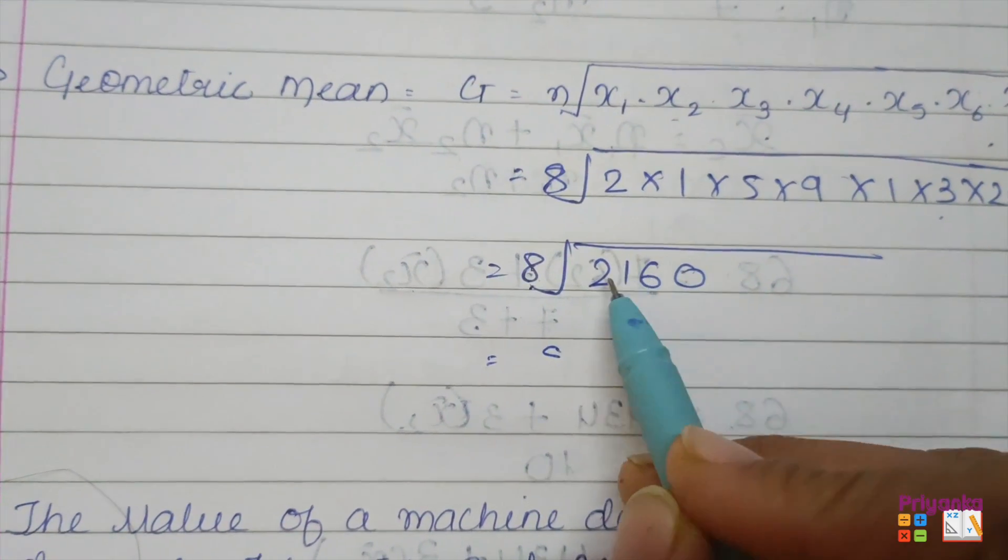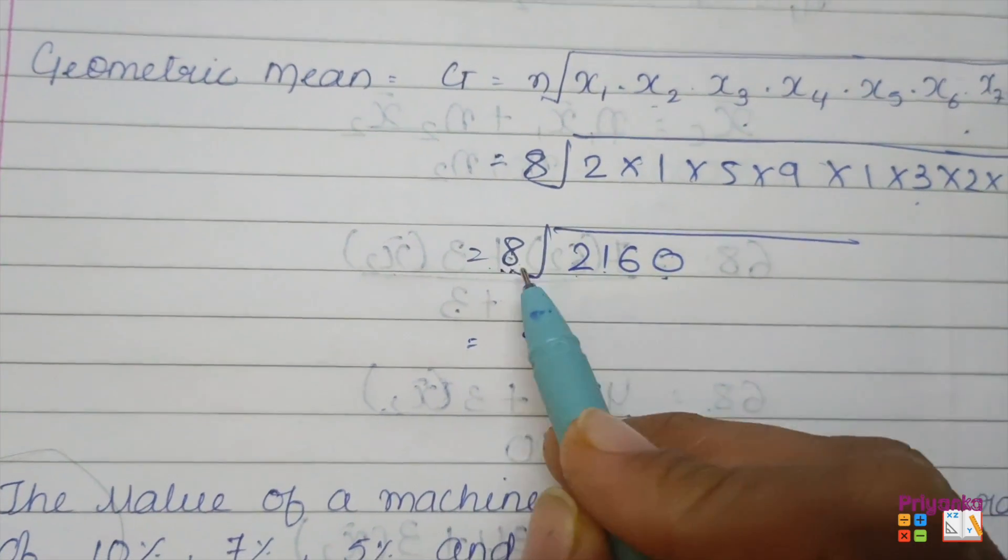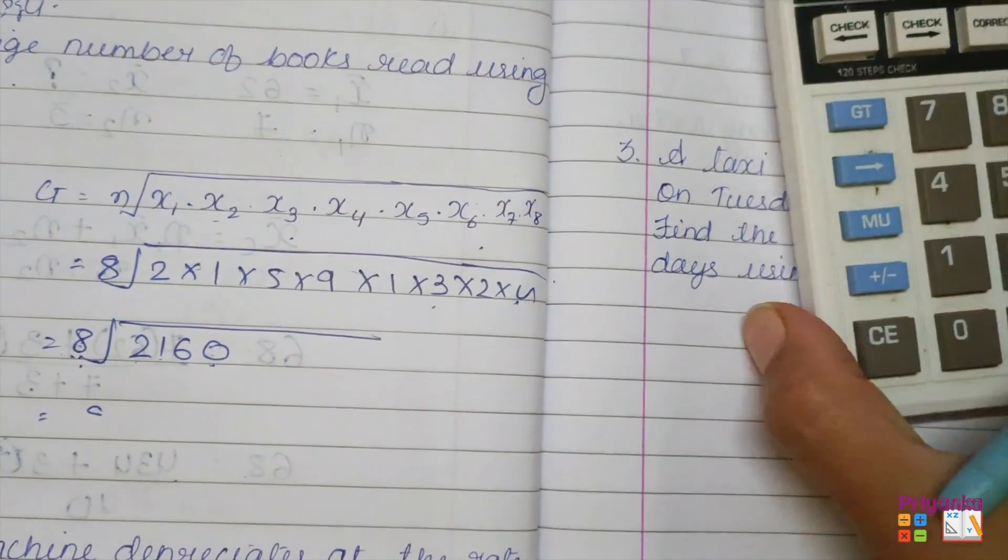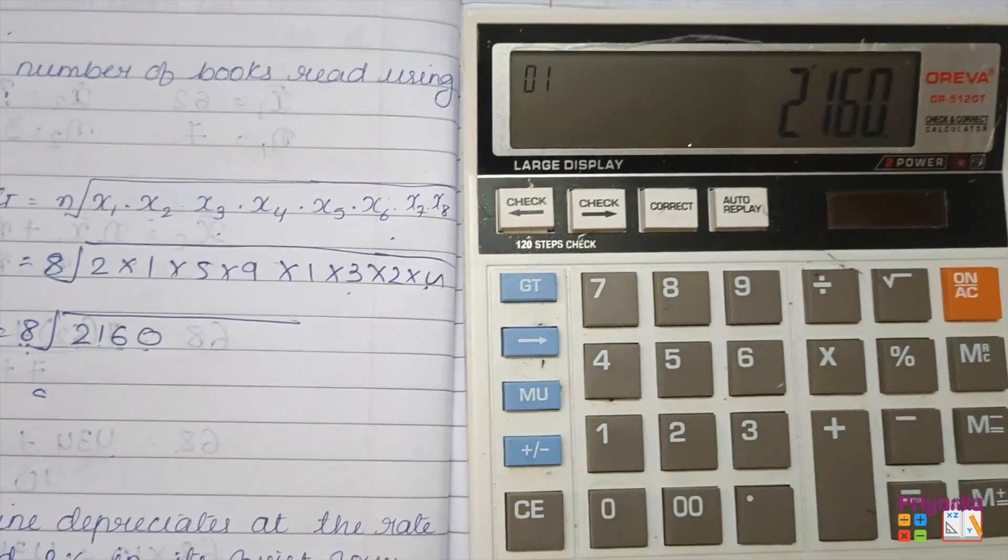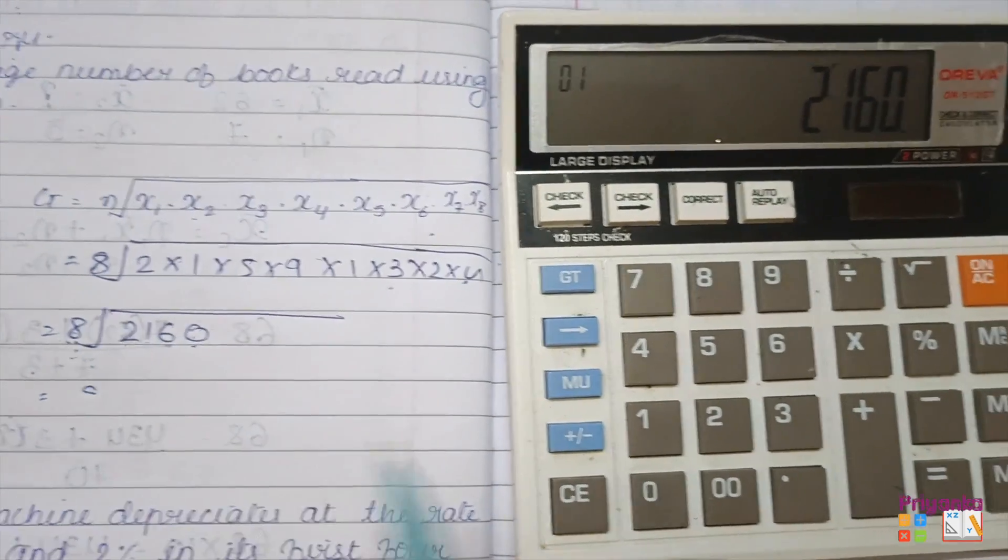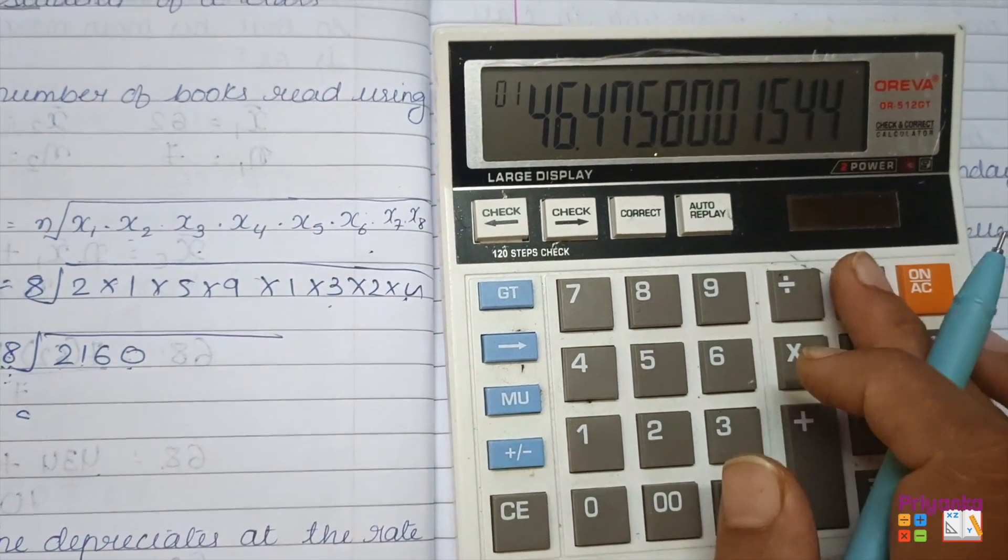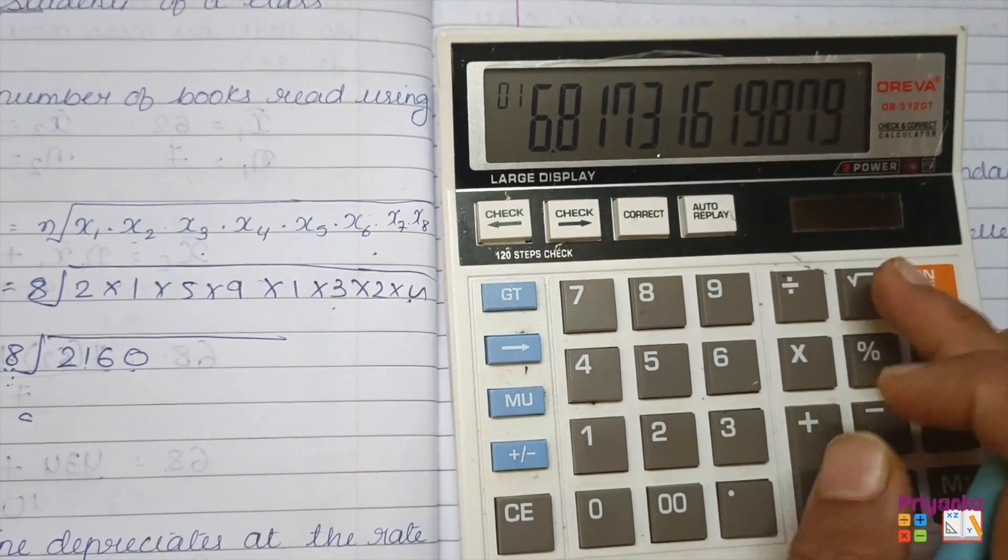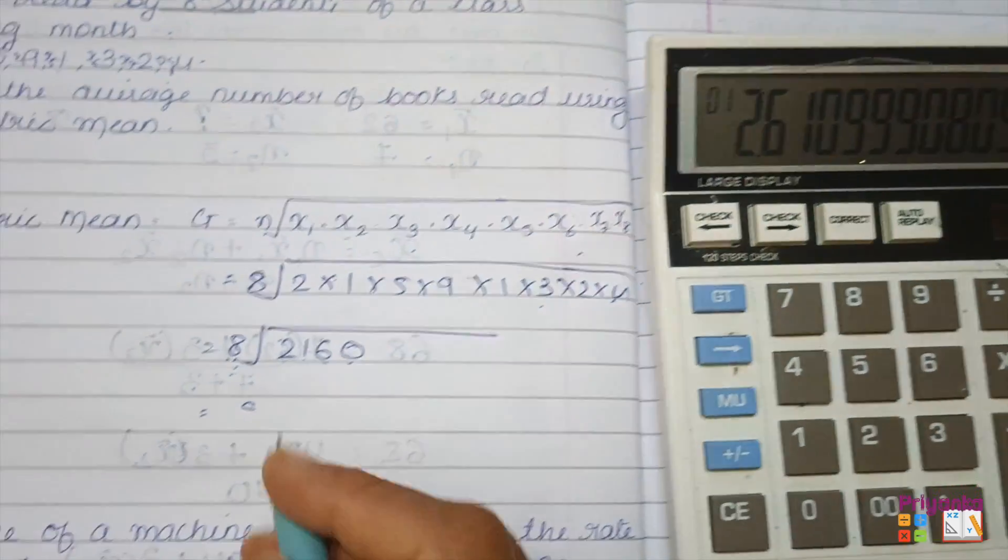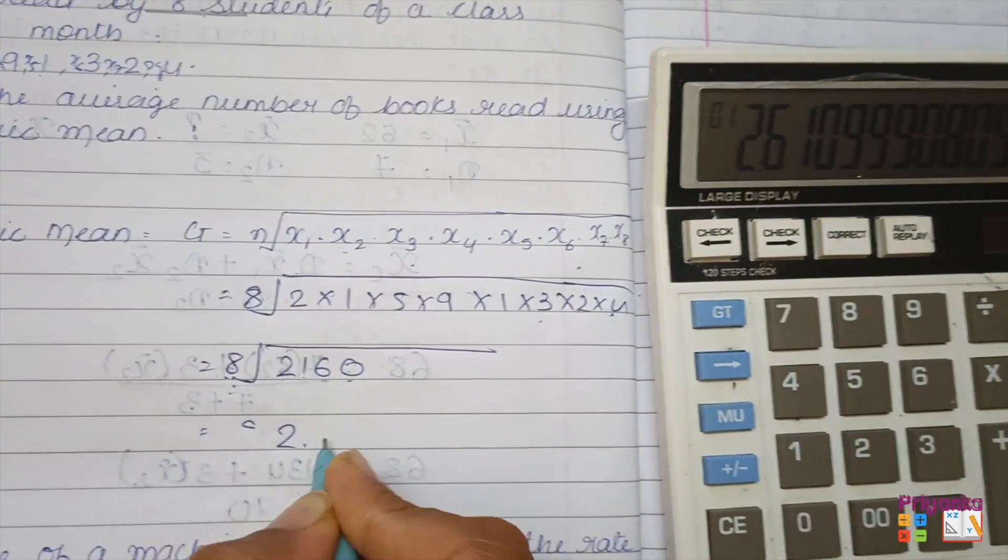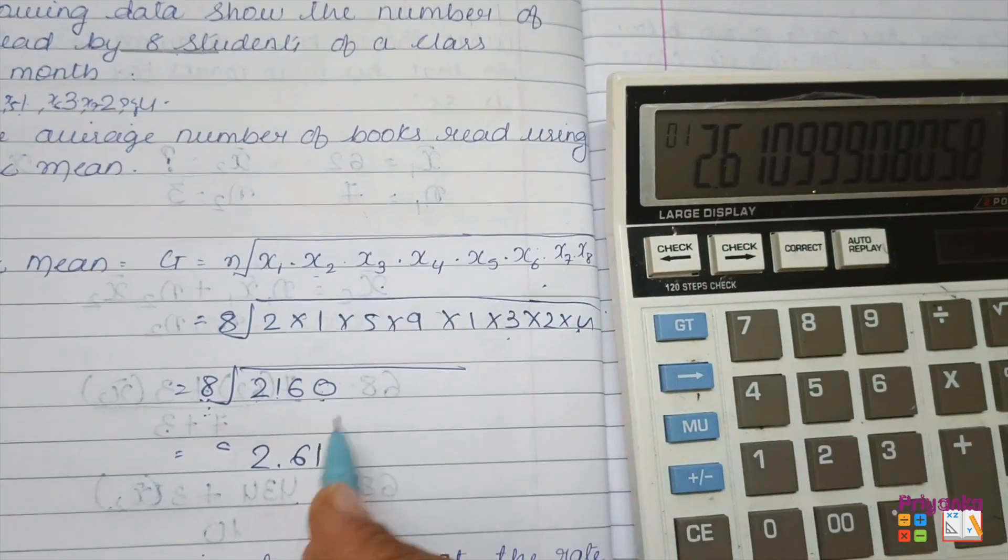Now here you can see the number 2160, which is under root, and n is 8. Now to find this out, just hold your calculator. Type 2160. The root is given 8. When you type the first root that is 2, second time that is 2×2 = 4, third time that is 2×2 = 4, 4×2 = 8, and that's what your answer will be: 2.61.